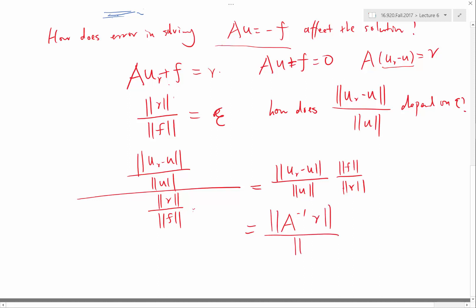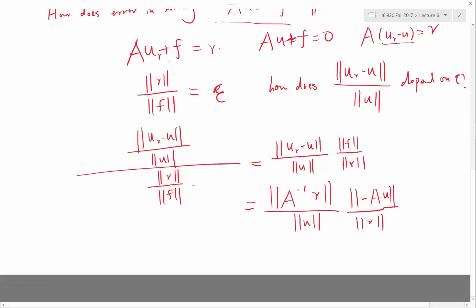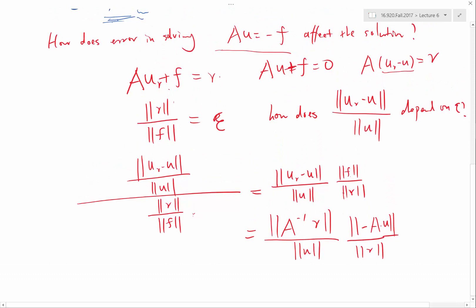We still have u here. We still have r here. We can also write f as minus of A times u. So we can see that the ratio of the relative error in the solution and relative error in the right-hand side can be written as the product of two ratios.